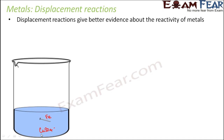Here, iron is the metal and it is placed in an aqueous solution which is a compound of another metal — copper. So basically, if you want to see which of iron and copper is more reactive, you put one metal into a solution of the other metal. Here we have put iron into a solution of copper sulfate, and this will help us tell which metal is more reactive.